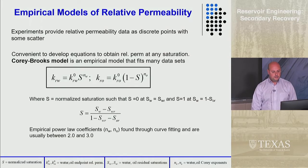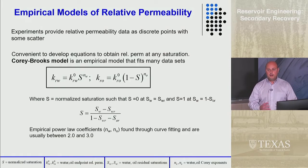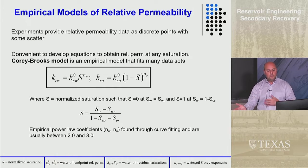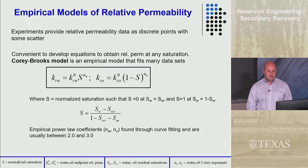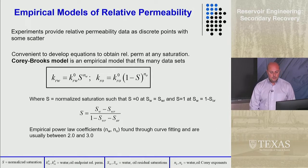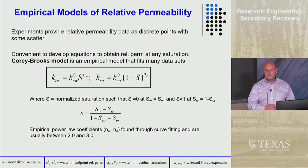There are empirical equations for relative permeability. The most commonly used is the Corey-Brooks model, which uses endpoint values k_rw0 and k_ro0, and a normalized saturation S. The normalized saturation S is normalized by the residual water saturation and residual oil saturation. N_w and N_o are exponents greater than one, usually between two and three — those come from curve fitting to experimental data, or I'd provide them on an exam or homework.